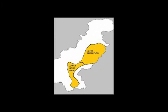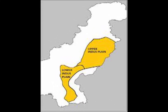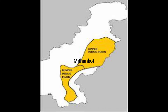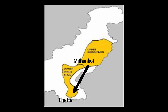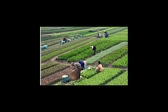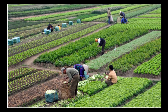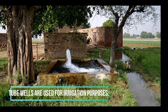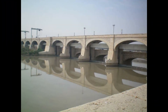The Lower Indus Plain includes the area from Mithankot to Thatta, which is in Sindh. It is a level alluvial plain and is very fertile, but yahan rainfall bohat kum hoti hai aur kum rainfall ki wajah se yahan agricultural activities bhi nahi ho sakti. Tube wells are used for irrigation purposes. Sukkur Barrage is the largest barrage here.